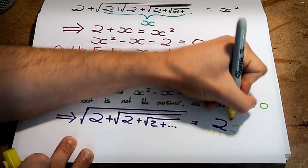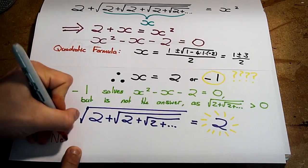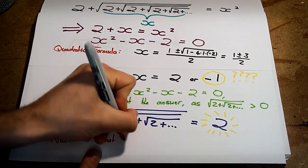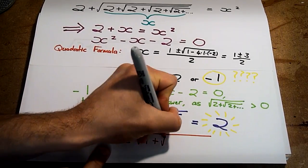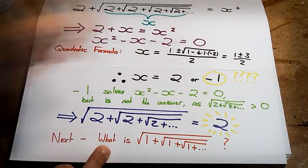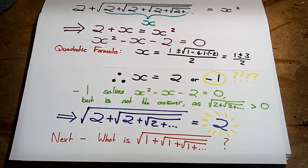Maybe this isn't as surprising as you thought. You can do this with numbers other than 2. If you look at the square root of 1 plus the square root of 1 plus the square root of 1, what's the answer in this case? And I'll give you a hint. It's not 1.